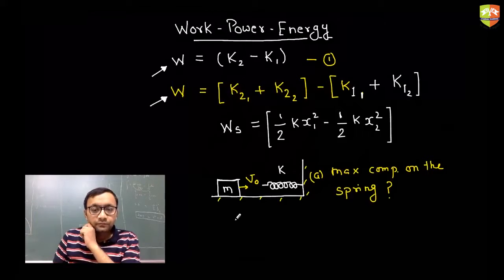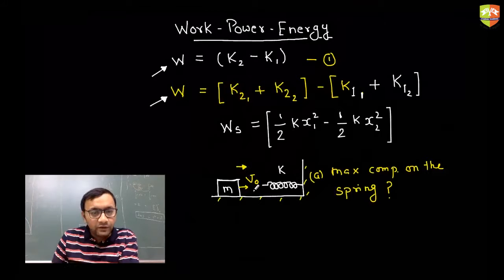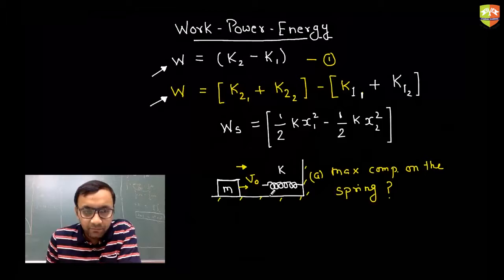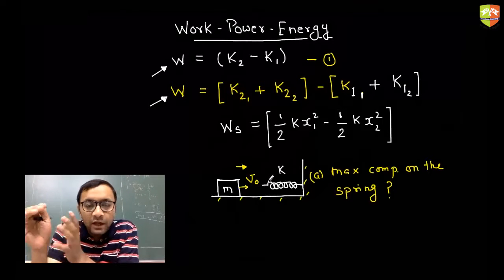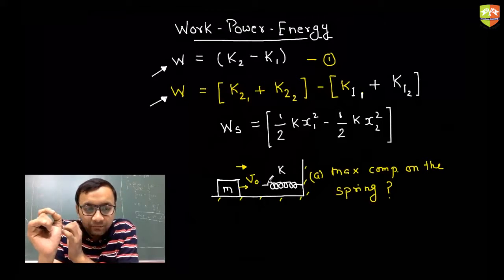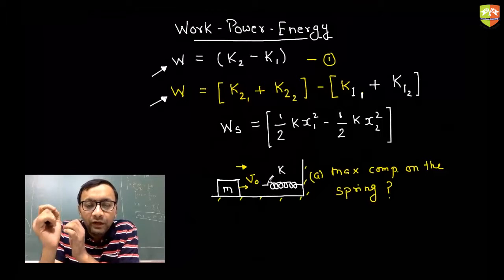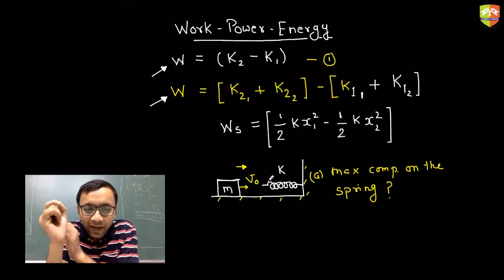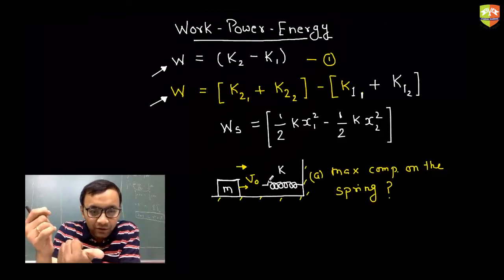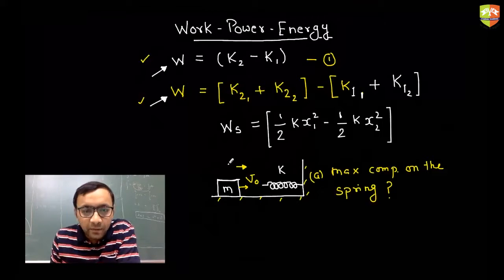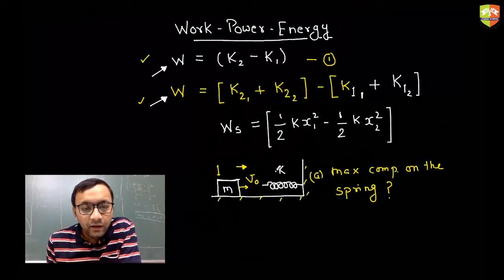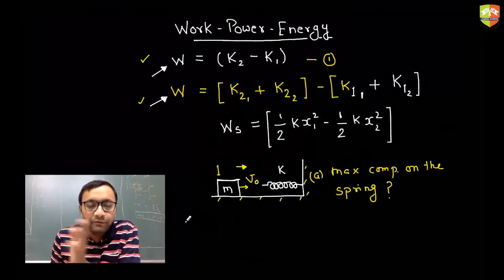What is the condition for maximum compression? This mass is moving forward with velocity; when it hits the spring its velocity decreases. As it moves forward the spring gets compressed more and more. When the mass momentarily comes to rest, that is the position of maximum compression — after that it starts going backwards. So we apply the work-energy theorem between the position where the mass has velocity v₀ and where it comes to rest.